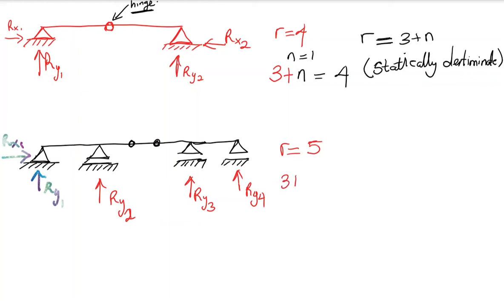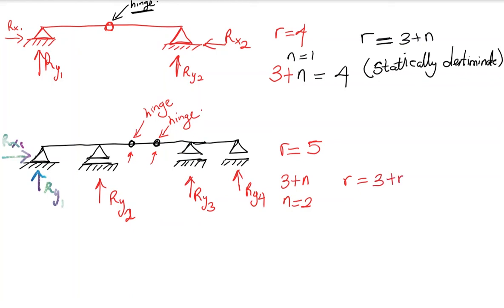We check three plus n. What is n? n is the number of conditional equations. At each hinge the moment is equal to zero, so we can write an extra equation at each hinge. With two hinges, n becomes equal to two. Three plus two equals five, so r equals three plus n.